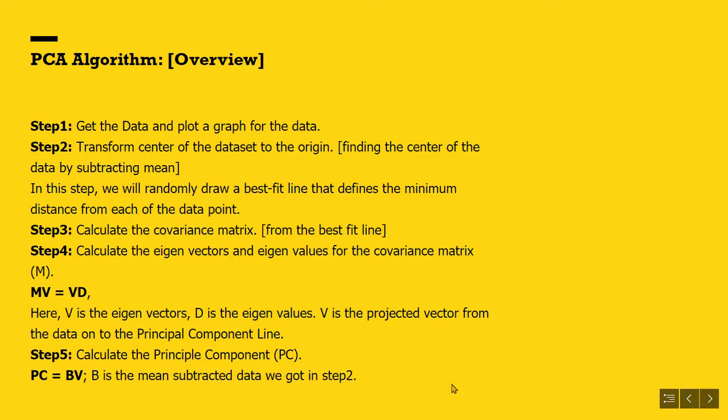Step 4: Calculate the eigenvectors and eigenvalues for the covariance matrix. Mv equals Vd. Here, V is the eigenvector, or the singular vector. D is the eigenvalues. V is the projected vector from the data onto the principal component line. The vector is perpendicular to the data.